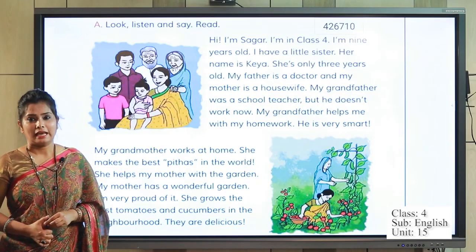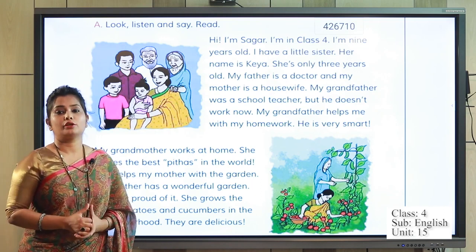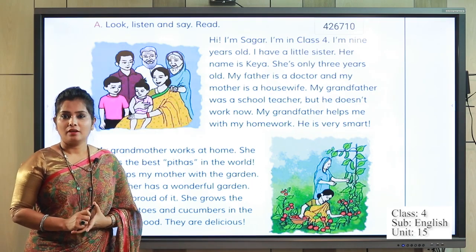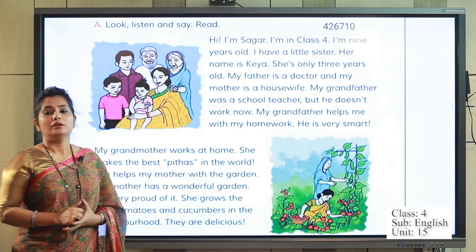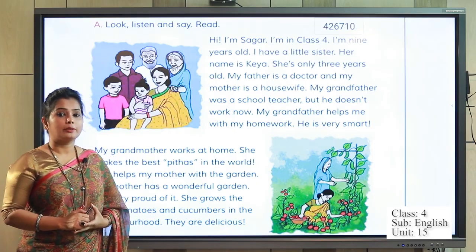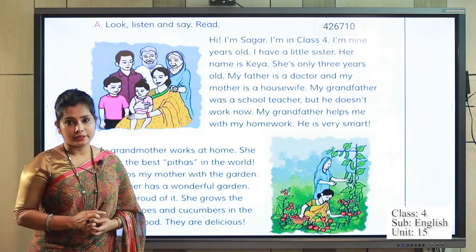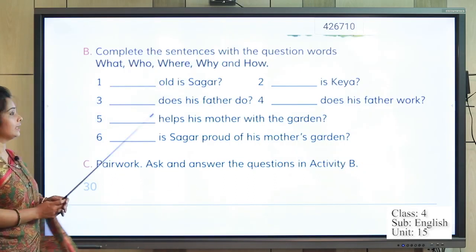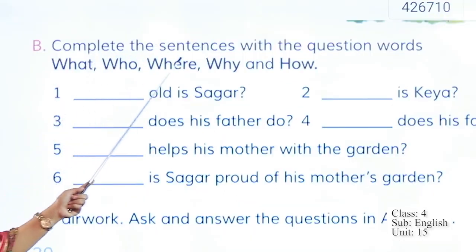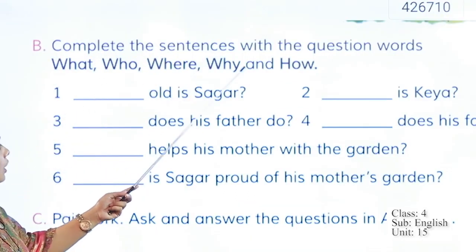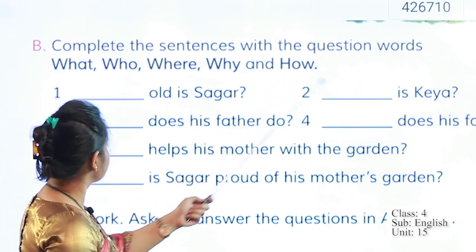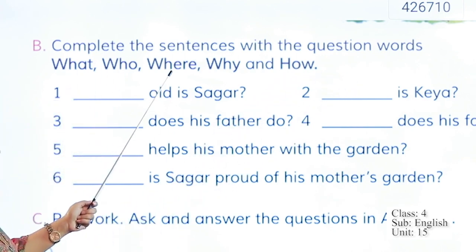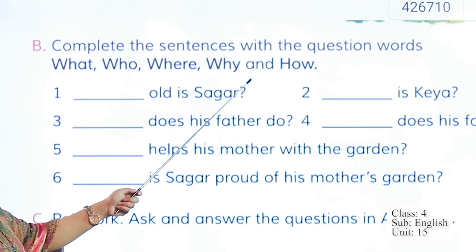Dear student, today in our lesson we are going to work on Activity B. Please turn over the page and look at page number 30. Here in Activity B, we have to complete the sentences with the question words: what, who, where, why, and how.